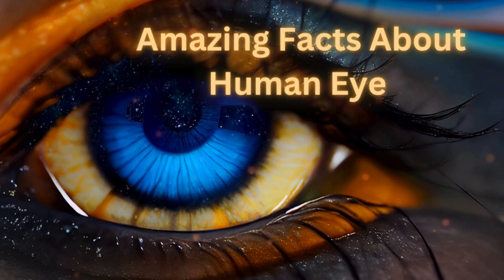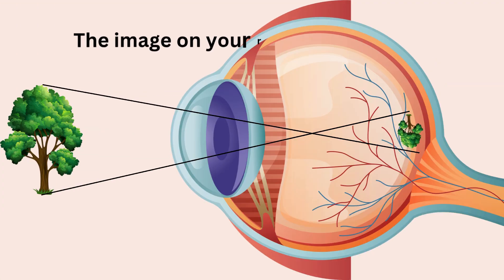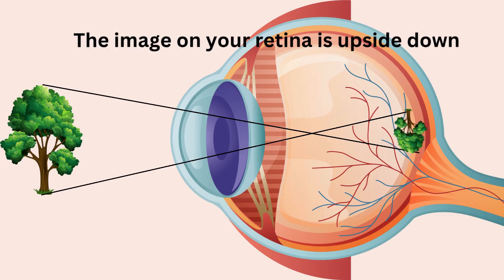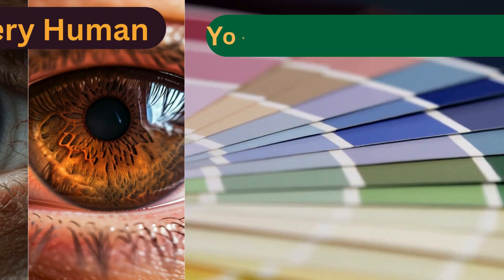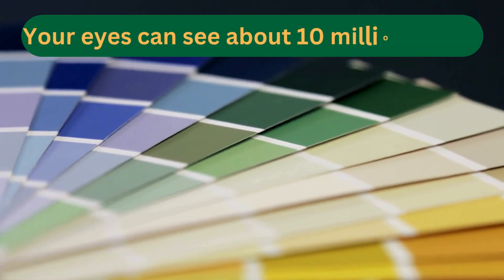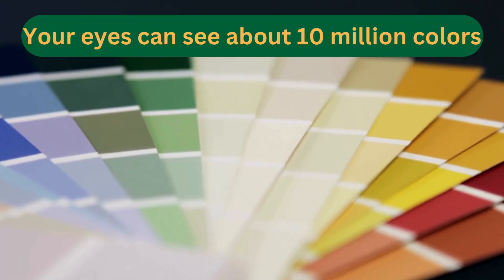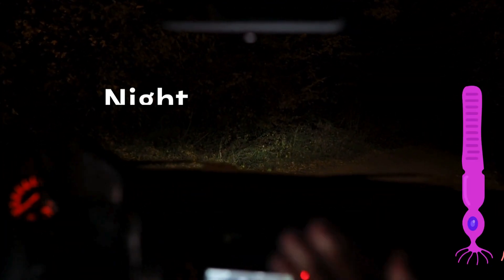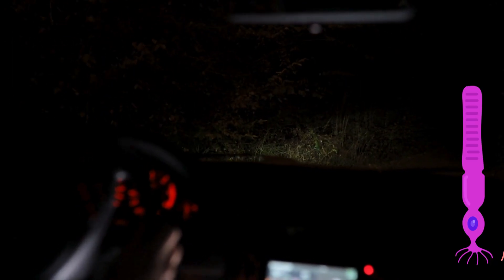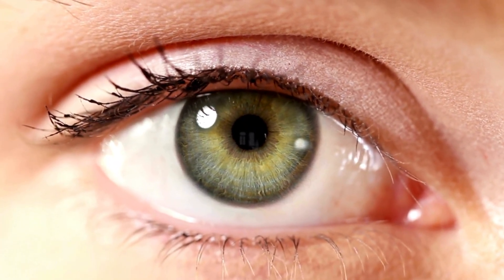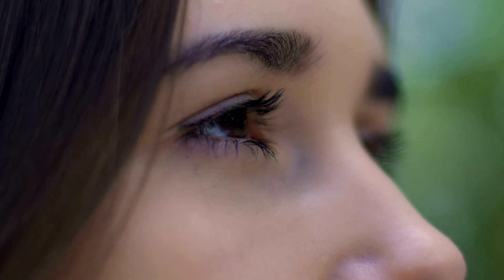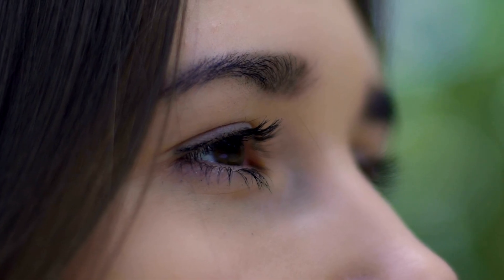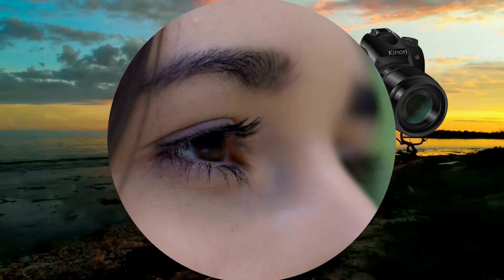Here are some mind-blowing facts about your eyes: the image on your retina is upside down, but your brain flips it so the world looks right. Your iris is as unique as a fingerprint — no two are alike. Your eyes can see about 10 million colors, and they're always moving with tiny twitches called saccades to keep your vision sharp. Your rods can detect a single speck of light, making you a night vision pro. With a resolution of 576 megapixels, autofocus, and great image stabilization, the human eye works well in both bright and low light — truly a super-powered camera that is alive.